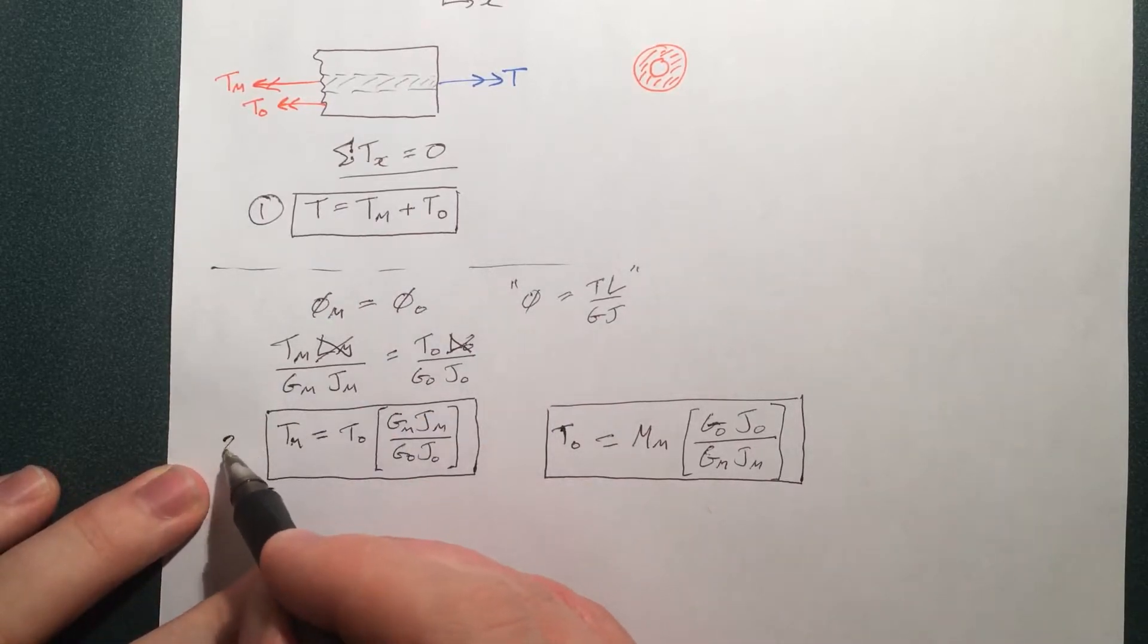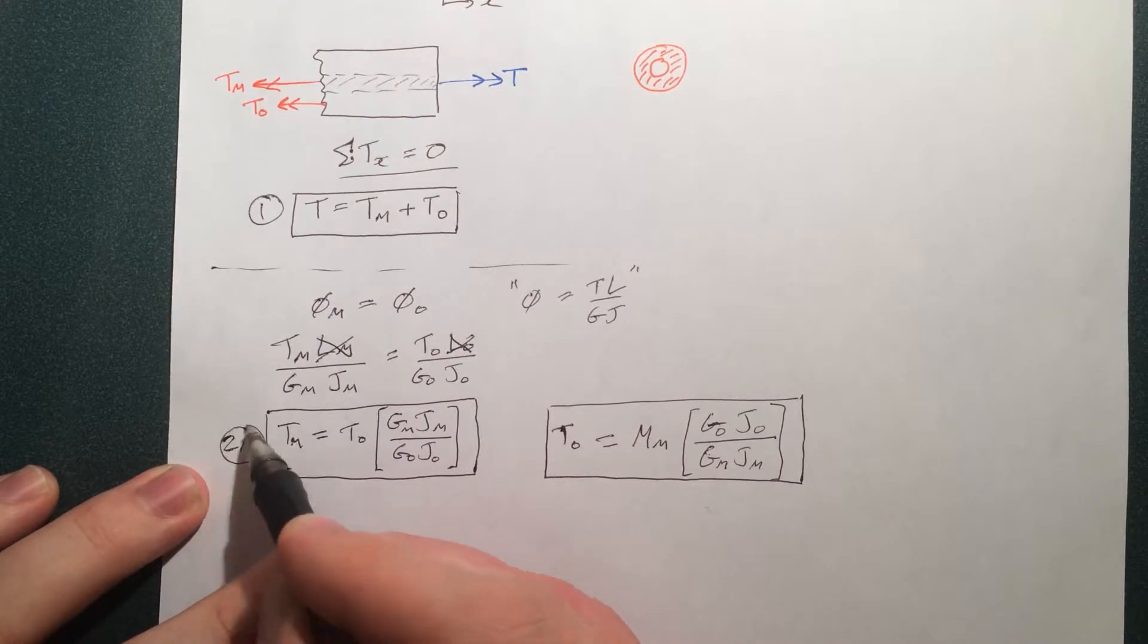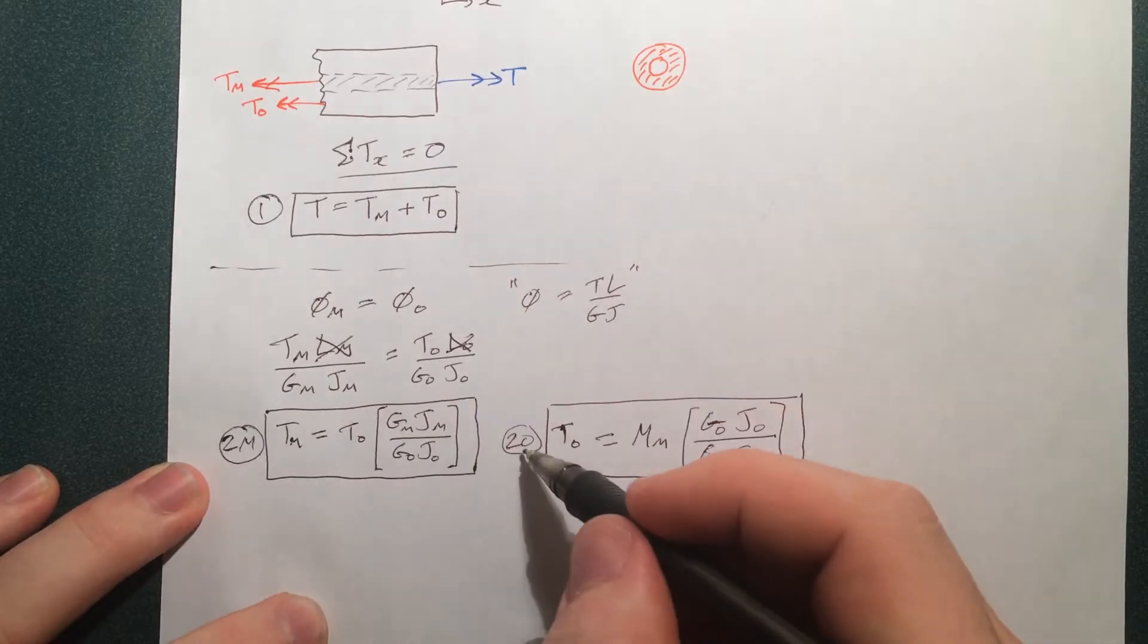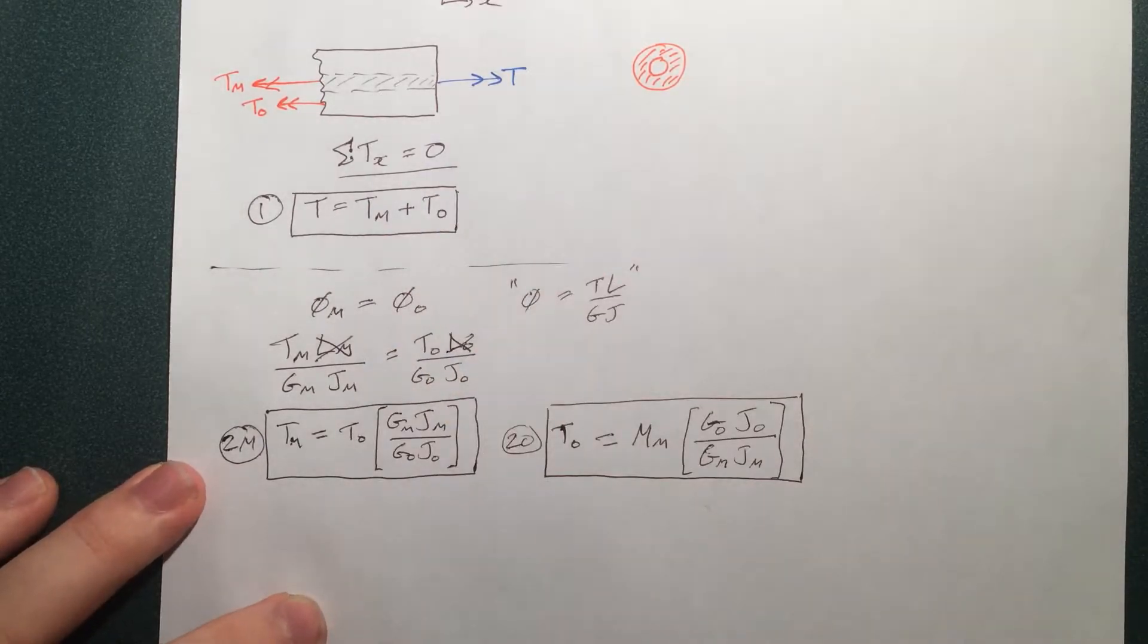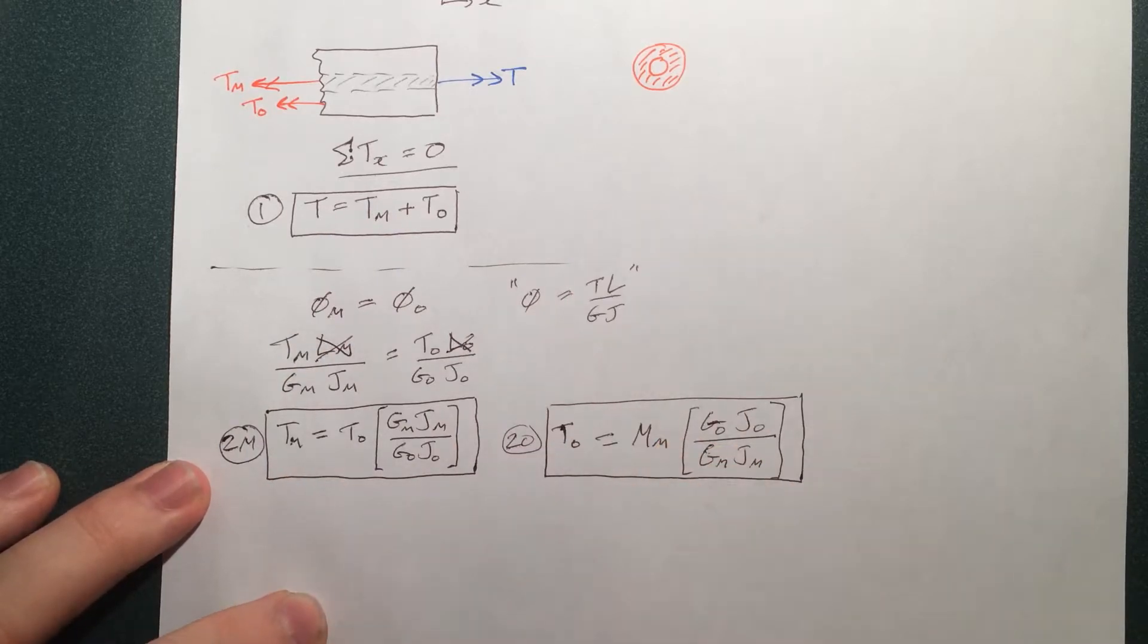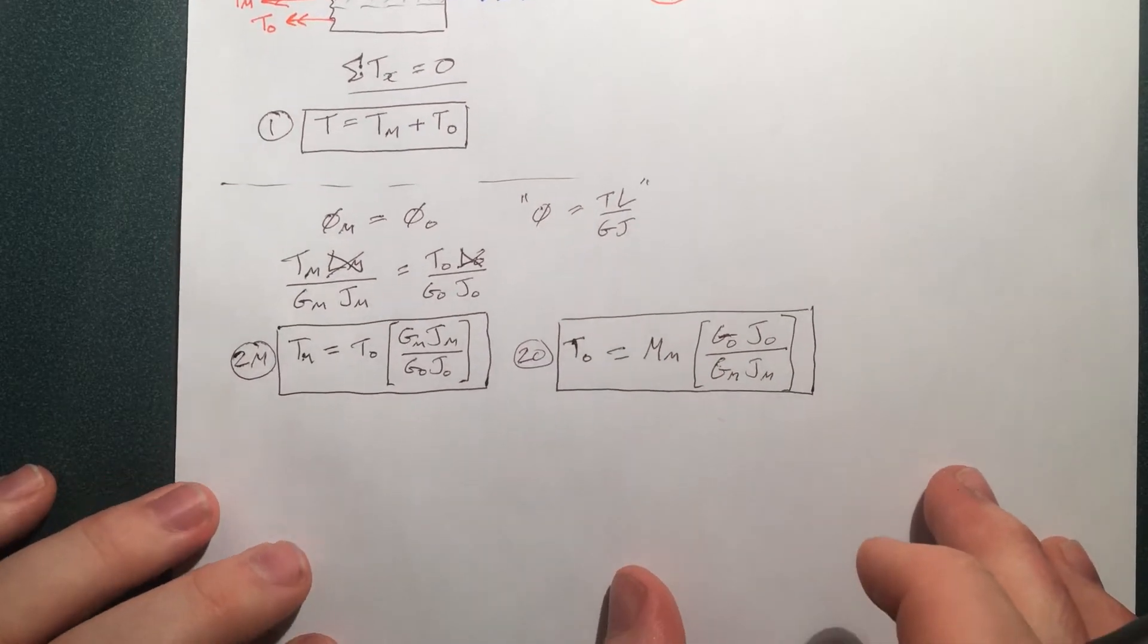So let's go ahead and take this, let's just call it 2m, and this 2o. We'll plug 2m into 1, and 2o into 1, and we'll solve for the middle, torque in the middle, and the torque in the outside for each of these pieces.